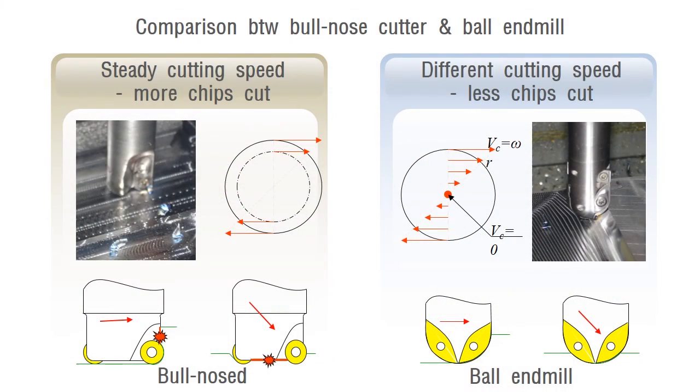As you can see, AI Cam uses bullnose cutter, which makes semi-finish operation more efficient. Compared to ball end mill, this tool has more advantage for the machining because the speed is constant and better for chip elimination. However, bullnose tool could be dangerous without experience.